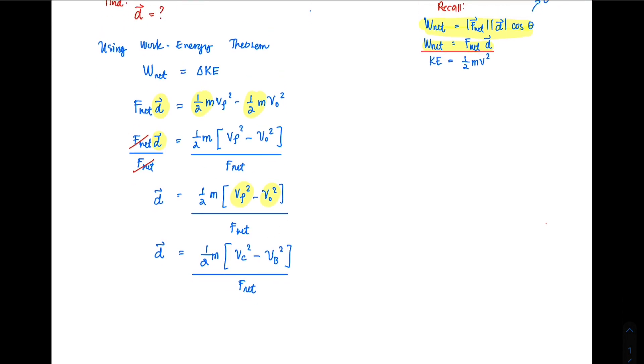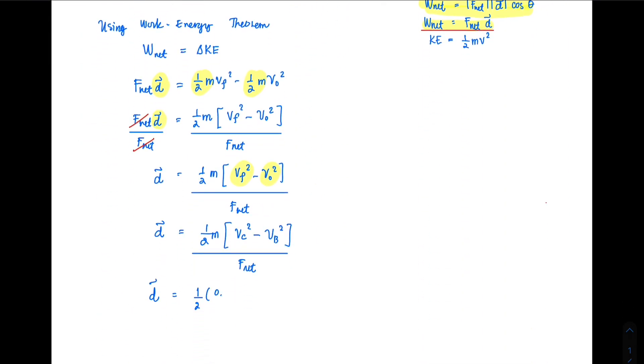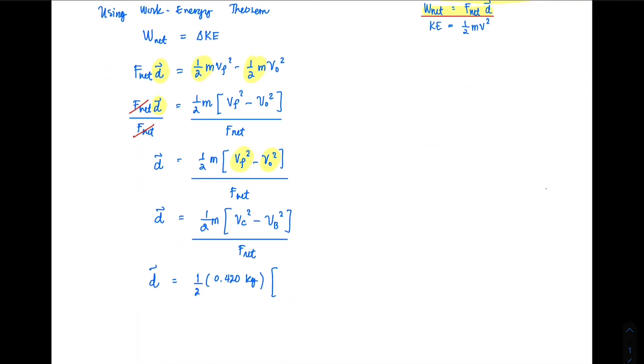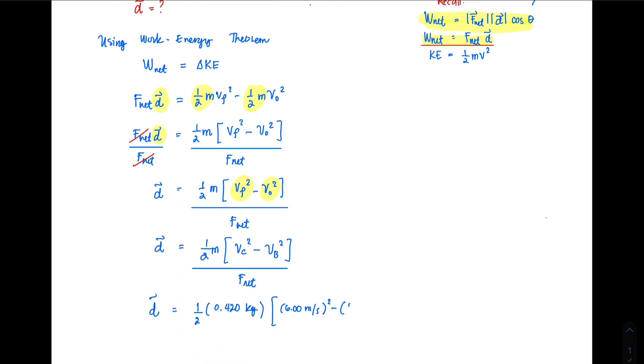If I'm going to continue with this, this will become (1/2) times the mass as given in the problem, 0.420 kilograms, times the final velocity at point C, 6 meters per second squared, minus the initial velocity 2 meters per second squared, and everything is divided by the applied force which is 40 newtons.